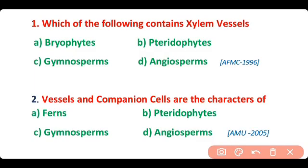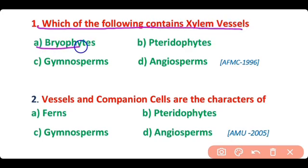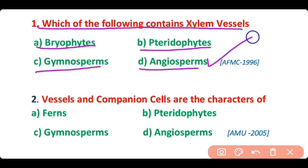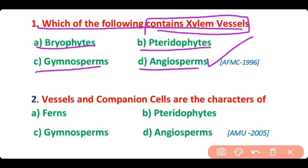Question 1. Which of the following contains xylem vessels: bryophytes, pteridophytes, gymnosperms, or angiosperms? The correct answer is option D. Angiosperms' xylem contains vessels, while vessels are absent in bryophytes, pteridophytes, and gymnosperms.